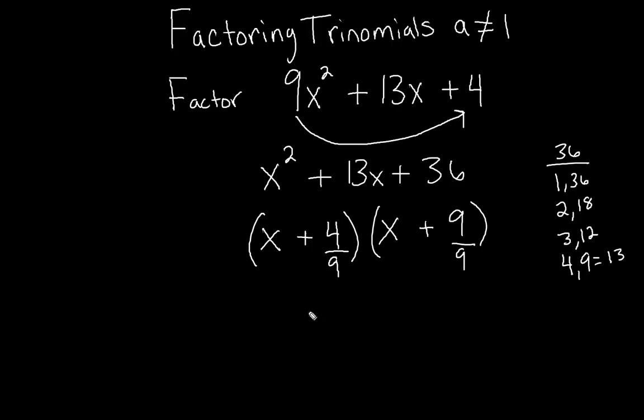Then we're going to go ahead and simplify where we can. So if we can simplify our fractions, we're going to do that. This first one, we cannot simplify. 4 9ths, we can't simplify it. So we're just going to leave it as 4 9ths. This other one, though, x plus 9 divided by 9 is just 1. So we can simplify it.